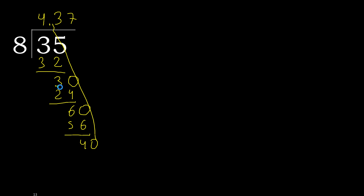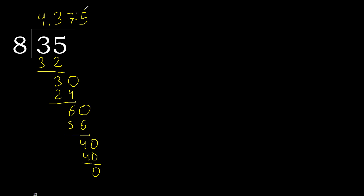40. 8 multiplied by 5: 40 is not greater. Ok, subtract — 0. Remainder 0, therefore finish. 35 divided by 8 is here — the answer is 4.375.